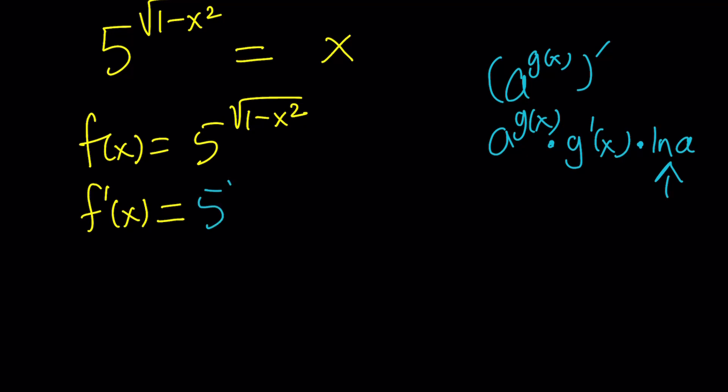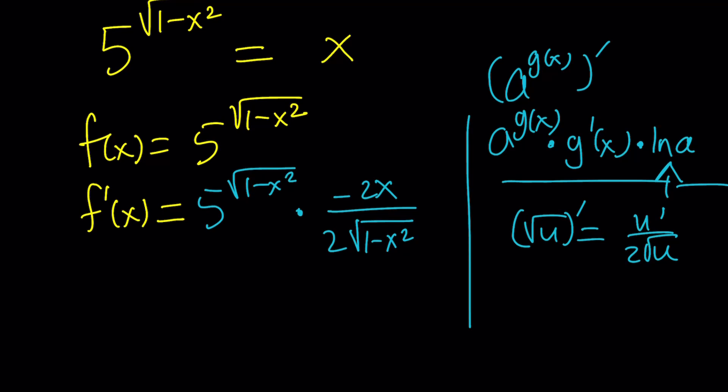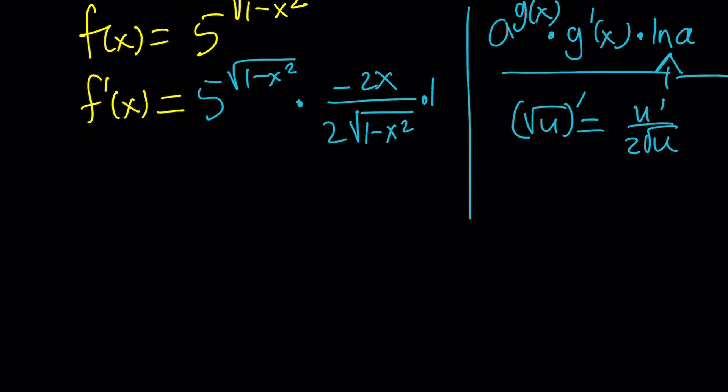So this becomes 5 to the power, the same thing, times the derivative of square root of 1 minus x squared, which is negative 2x divided by 2 times the square root of 1 minus x squared. And again, in this case, we are talking about the square root of u differentiated, which is u prime divided by 2 root u. So it's a couple of things, not a couple of things, thousands of things, right? You have to memorize if you're doing calculus. Anyways, that's the formula, times ln 5.